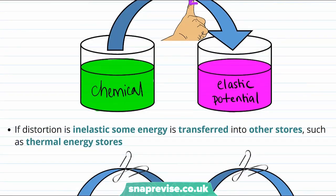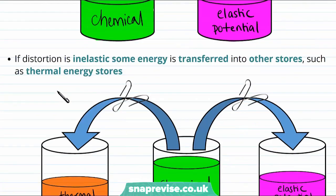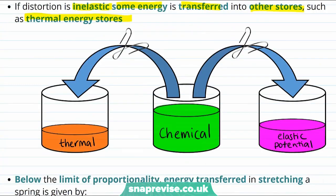So that was the elastic case. But if the distortion is inelastic, some energy will be transferred into other stores, such as thermal energy stores. For example, if we do work in trying to bend a paper clip, then some of this energy goes into the elastic potential energy store, but some of the energy goes into the thermal energy store of the paper clip. So this is actually quite interesting. It means that when we bend a paper clip, it will actually get hotter.